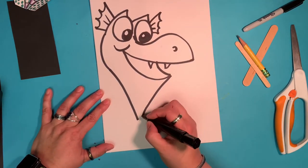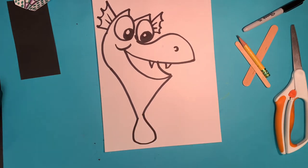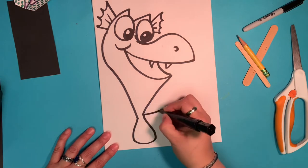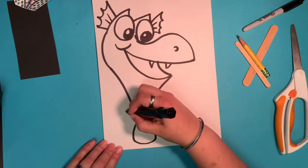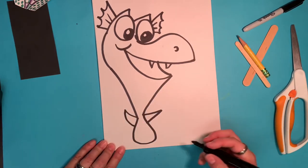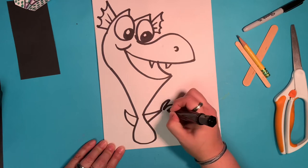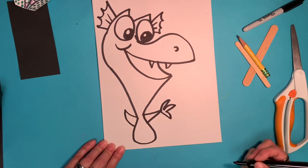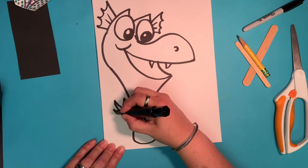Now his body, it looks like a raindrop. So we're going to make a raindrop shape. And we're going to put a letter V arm like this. And a letter V arm like this. And we're going to put some zigzags to be his claw. And some zigzags on this side to be his other claw.